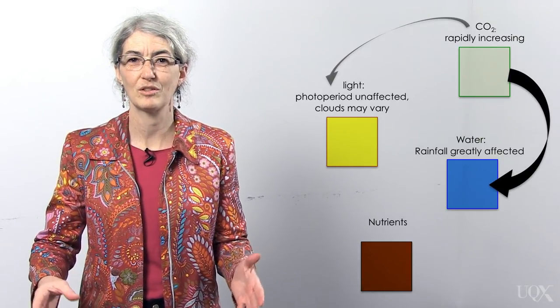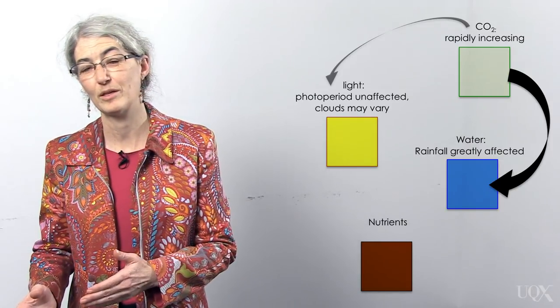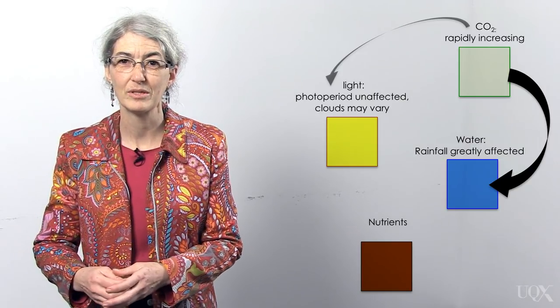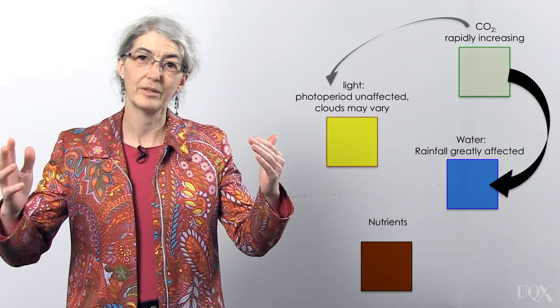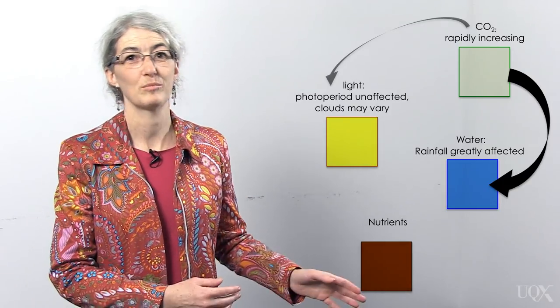Changing the climate changes where and when rain falls. Some areas become more wet and other areas become more dry. Rain might come too early or too late for crops. Hotter air holds more water, so when it rains it pours. Floods wash away seeds and plants.